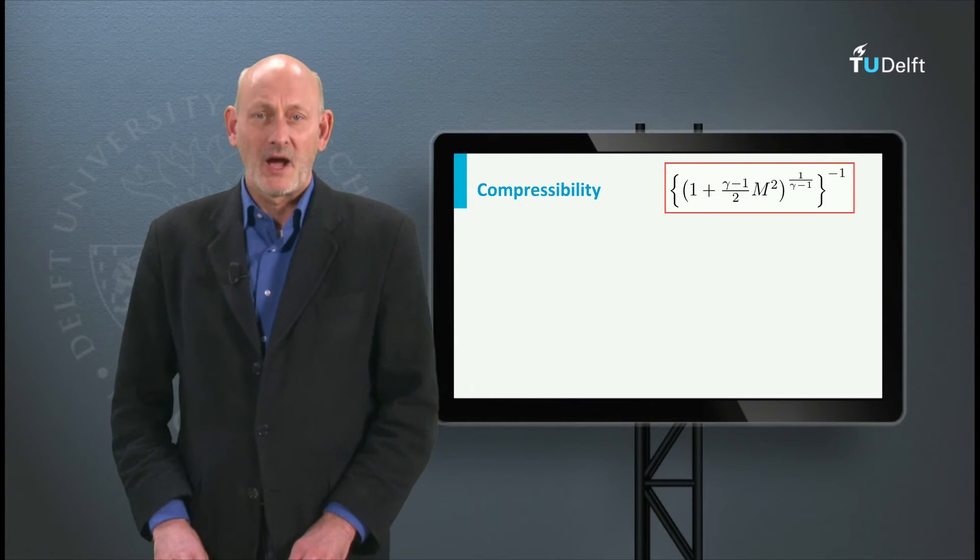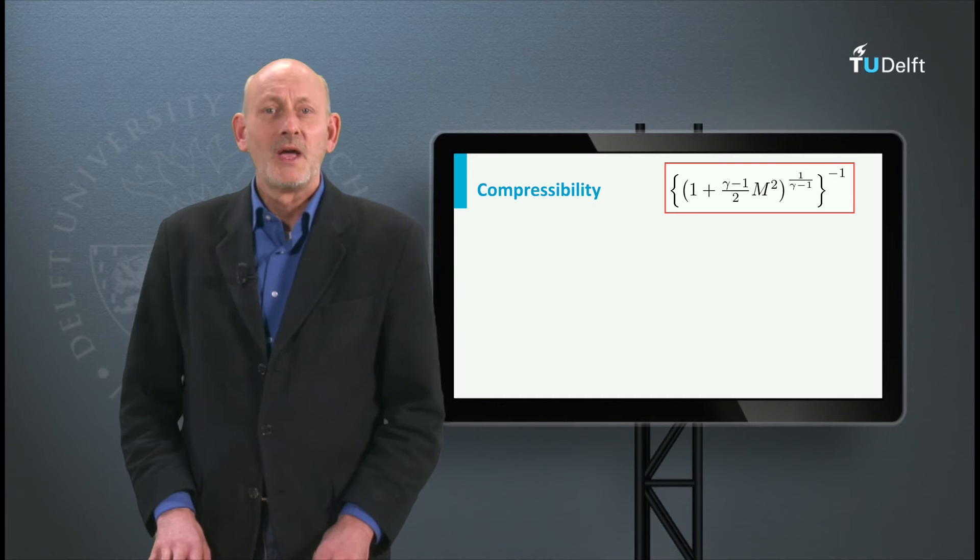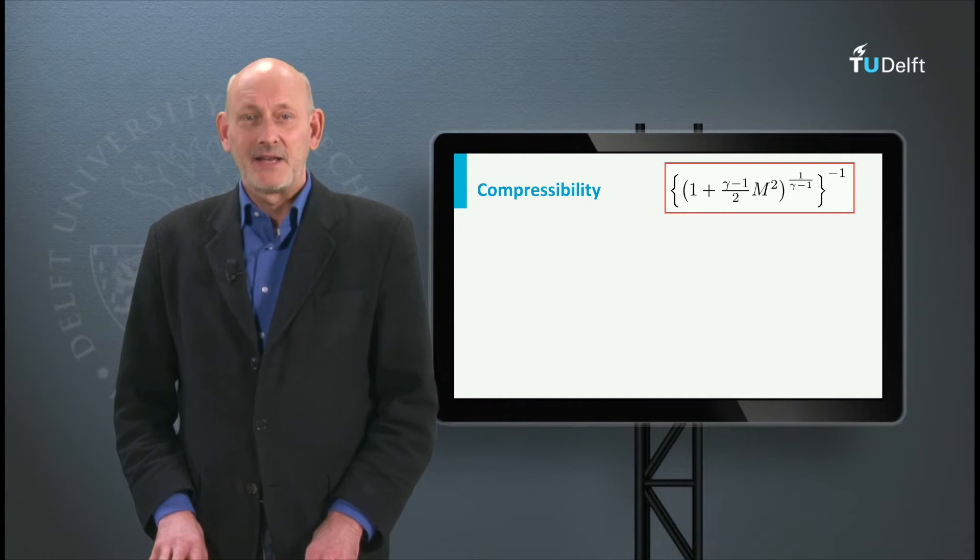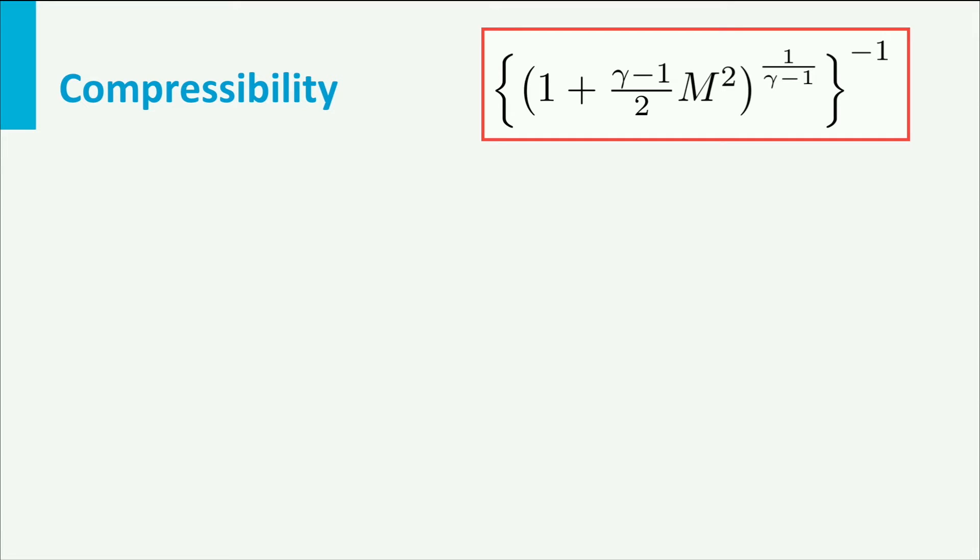If we want to have the ratio the other way around, so rho over rho 0, we can write the equation like this. Mind the minus in the exponent. This equation is valid when we speed up the flow from rest to a certain Mach number.